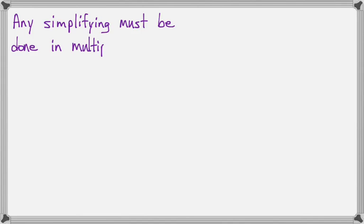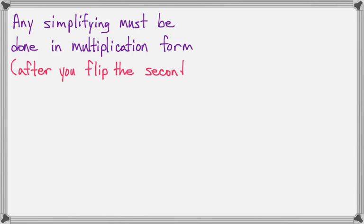So just as a reminder, any simplifying must be done while you're in multiplication form. You cannot mark things out or cross numbers out while you're in division form. So wait until you change divide to times and flip the second fraction.